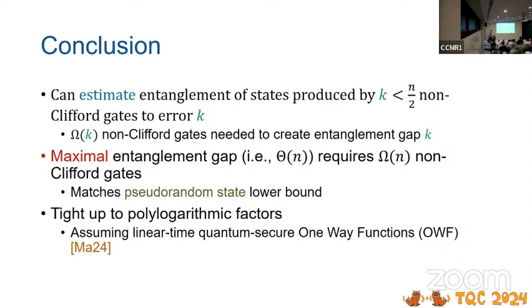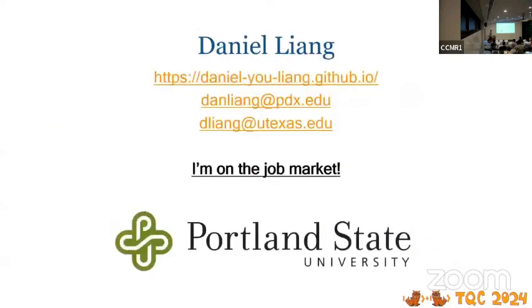You might be wondering about this assumption. The point is that this might not be the best assumption to rely on. But the idea is that if you could improve our result, then this would discredit the existence of linear time quantum secure one-way functions. We don't expect our techniques to be able to do such a thing. I was told I should do this, but I'll be on the job market soon, looking for a PhD or postdoc or faculty position. This is my contact info. Thank you.